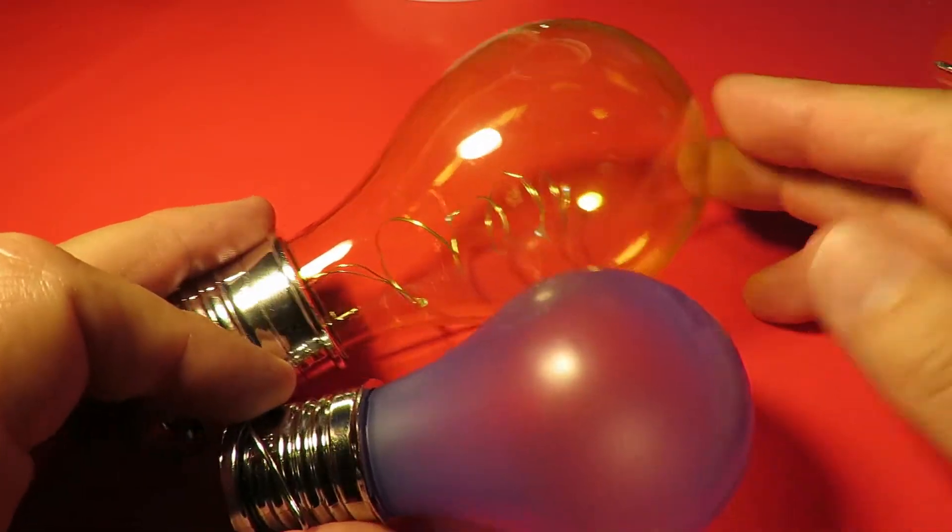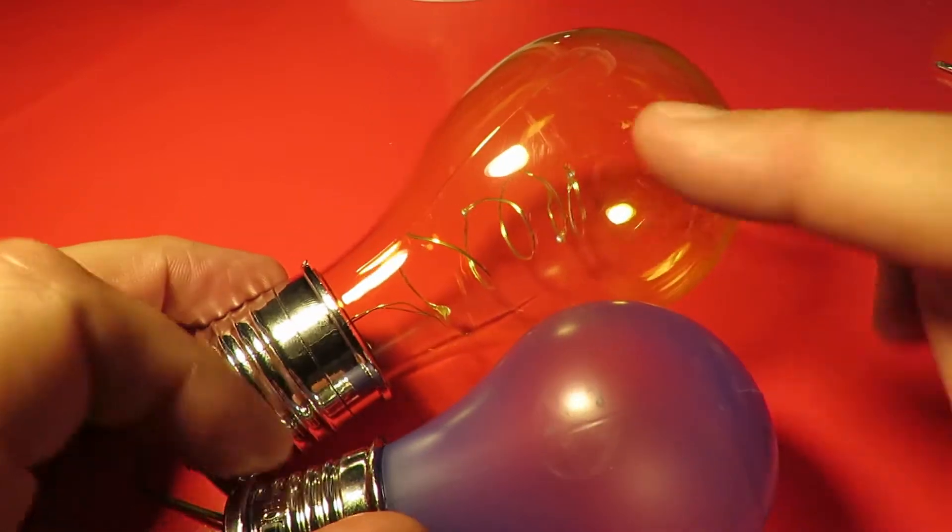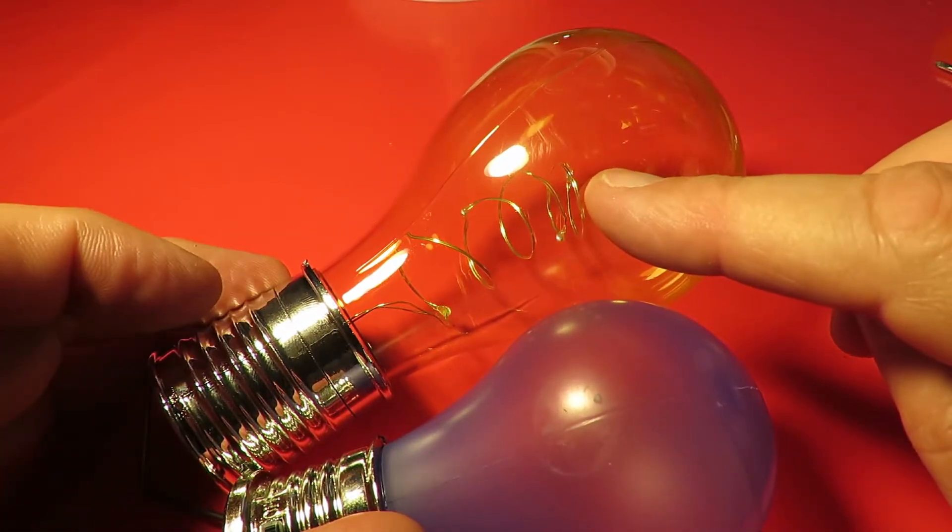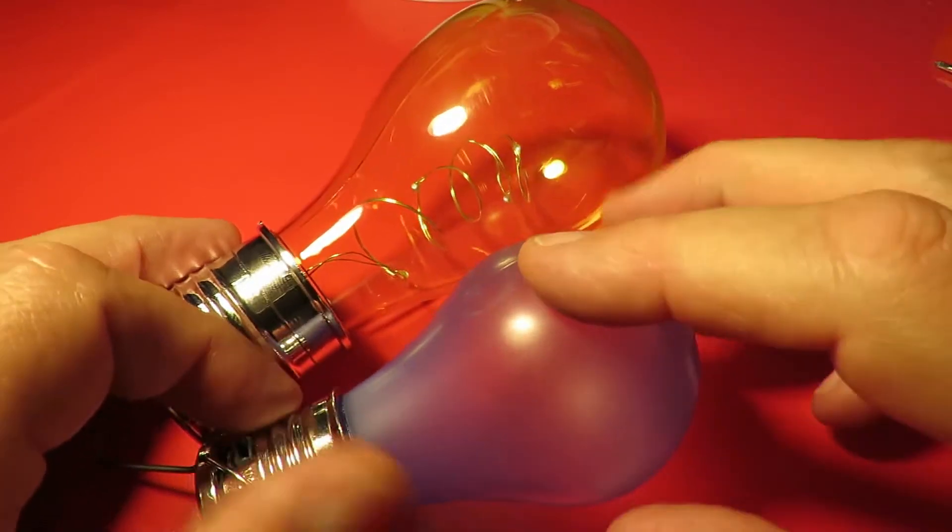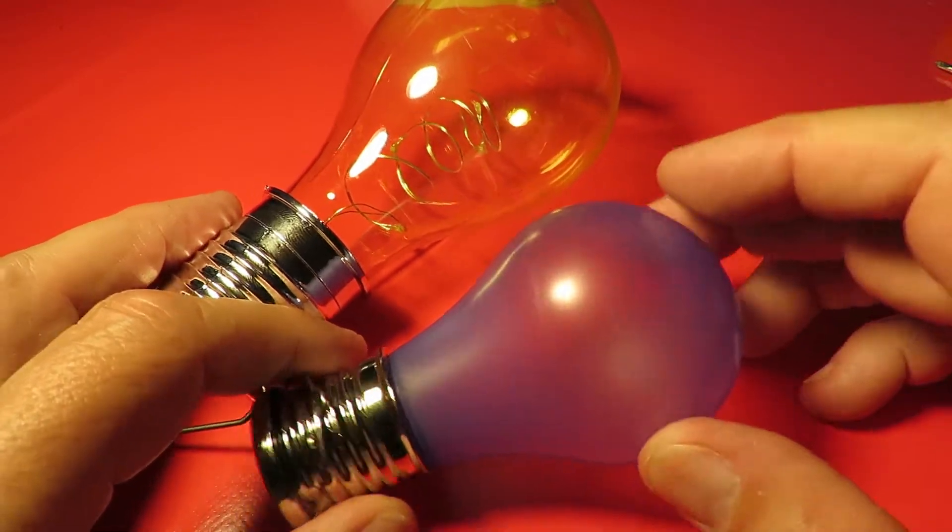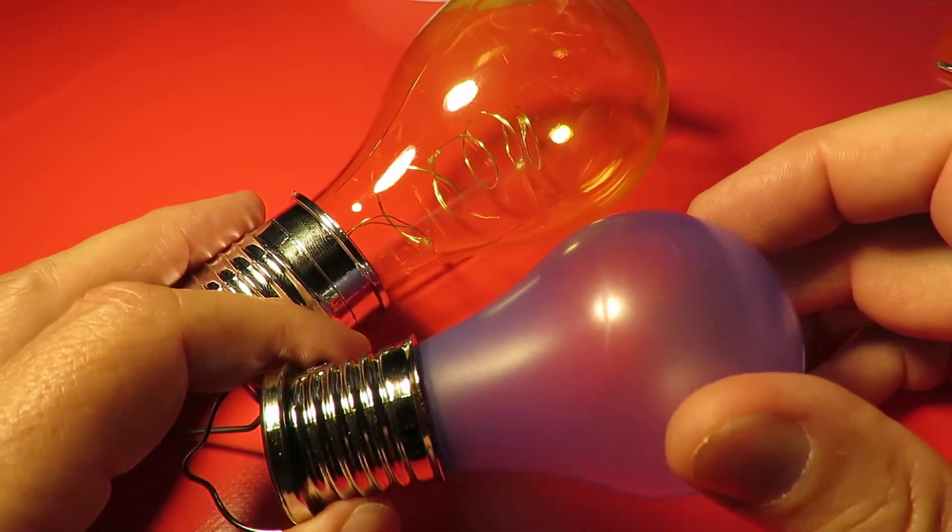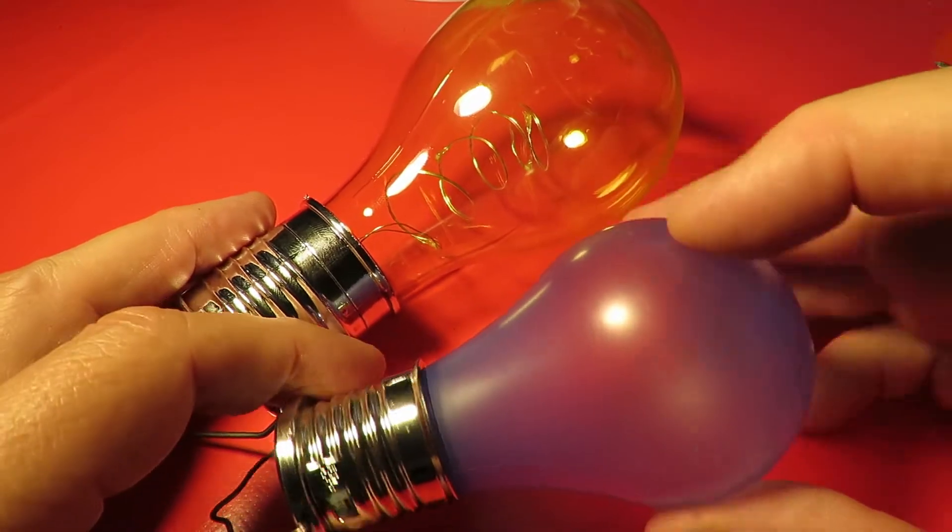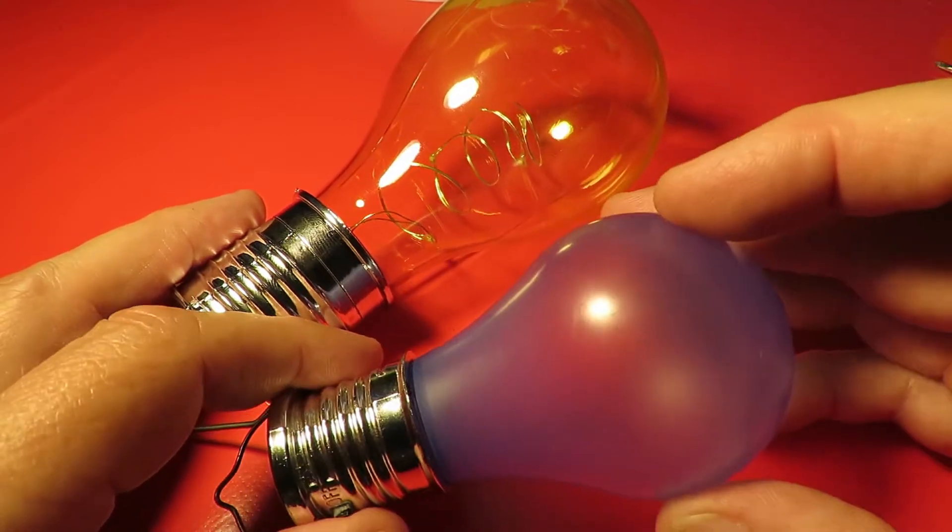I might as well do a comparison while we're at it. The bigger one is the current Poundland range. This one, I think, was last year's range. Or it may have come from Pound World or 99p store.